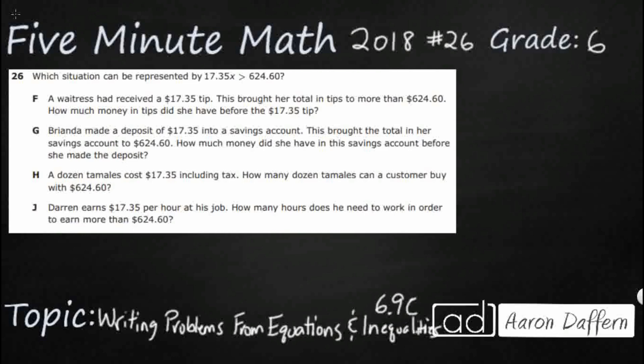So we simply have an inequality here: 17.35x is greater than 624.60, so probably dealing with money. We need to match the written situation to this inequality. Let's see what each of these situations look like. Obviously we are going to see this 17.35 and 624.60 all over the place. We're just going to need to look really at the inequality. Is it greater than, is it less than, sometimes might even be equal to make an equation.